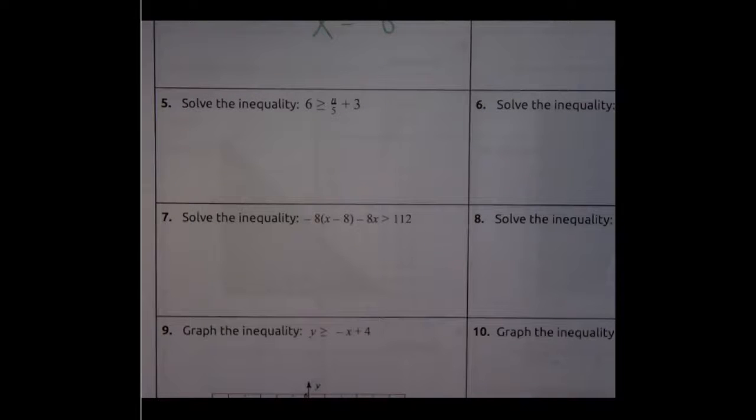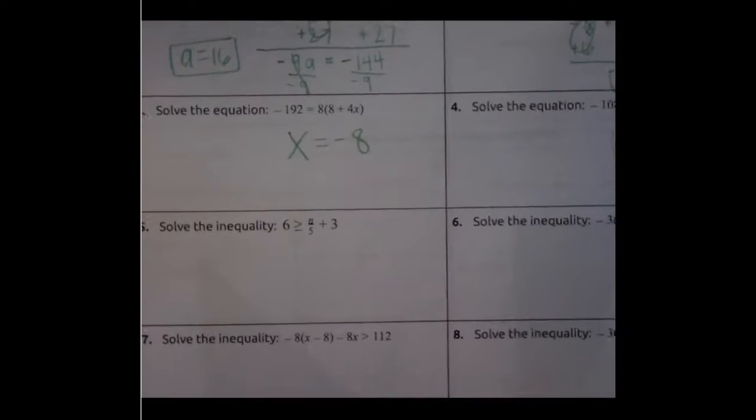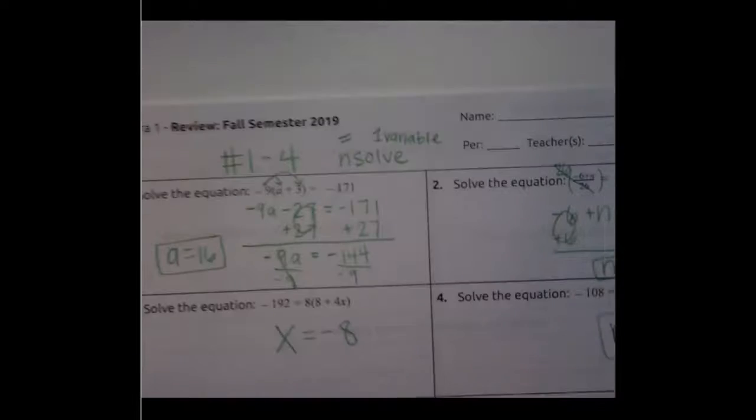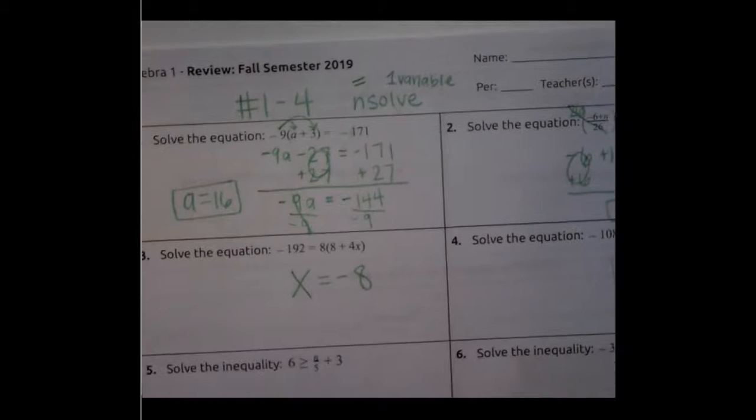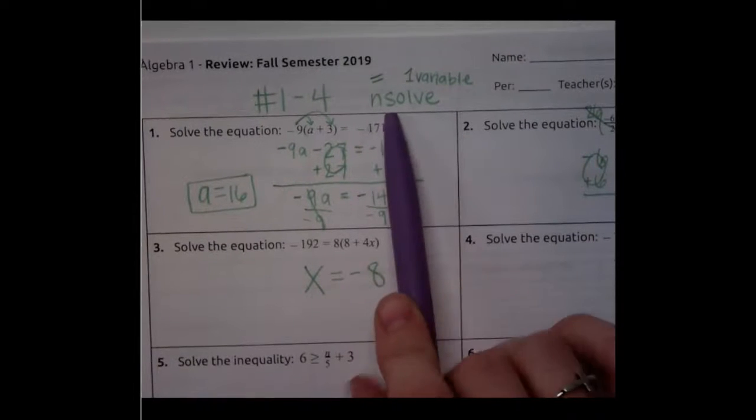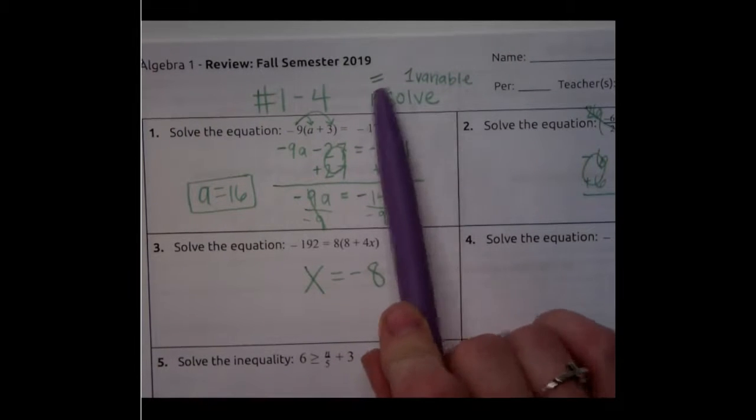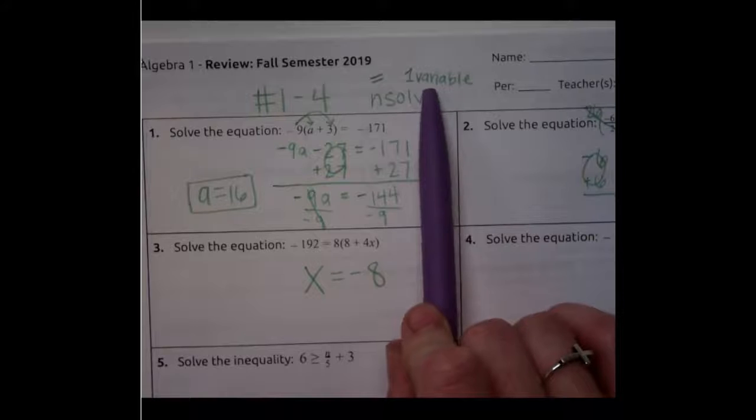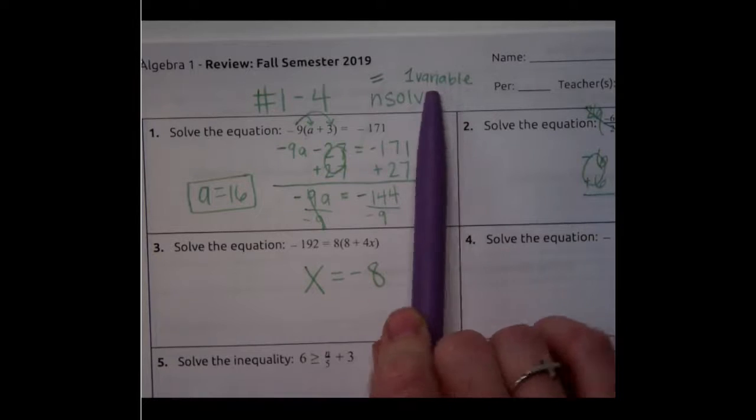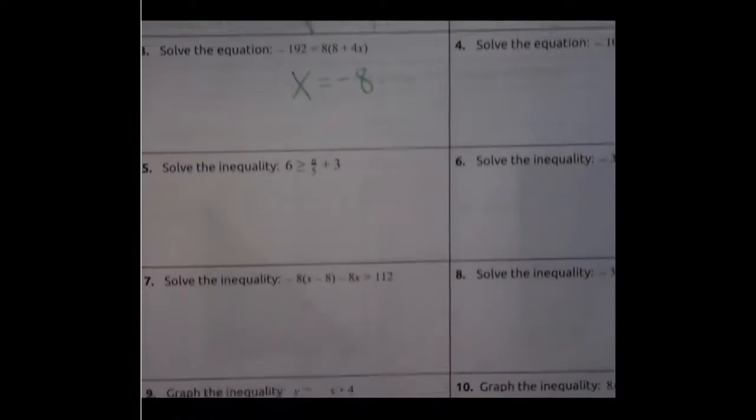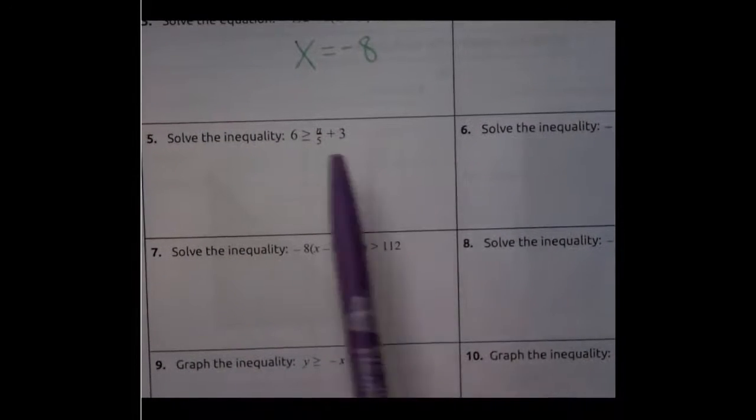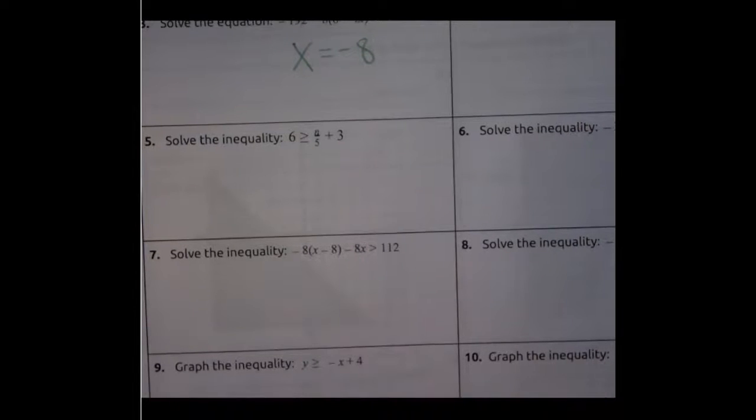If you just watched video number one that covers one through four, you learned about INSOLVE and how we can use INSOLVE for questions one through four on our review. Now INSOLVE you can only use when there is an equal sign or there is one variable and you have to have both of these conditions. So when we look at five through eight, we look at these symbols and notice that they're not equal signs, so we cannot use INSOLVE which means we need to solve by hand.